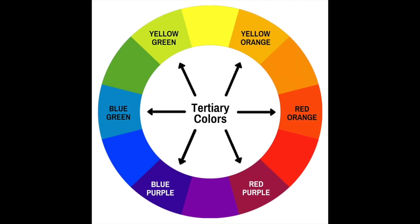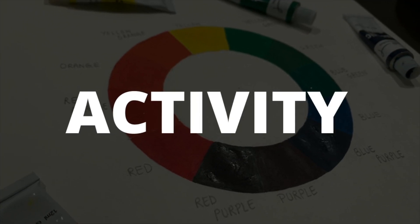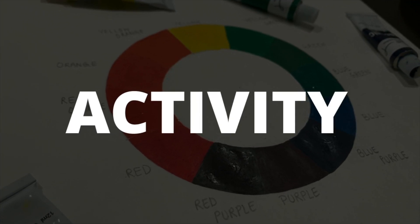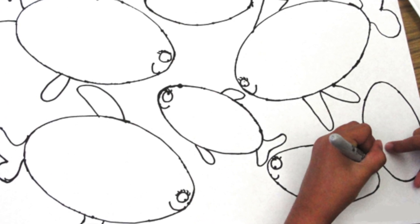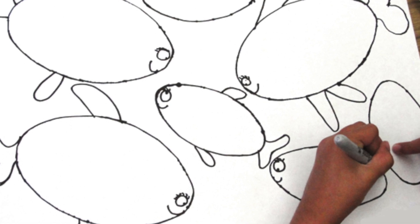So these are our tertiary colors: yellow-orange, red-orange, red-purple, blue-purple, blue-green, and yellow-green. Now can you make something with tertiary colors?